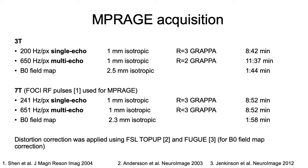We acquired single echo and multi-echo data at 3T and 7T, as well as B0 field maps, and then applied distortion correction with FSL top-up and FUGUE for the B0 field map correction.